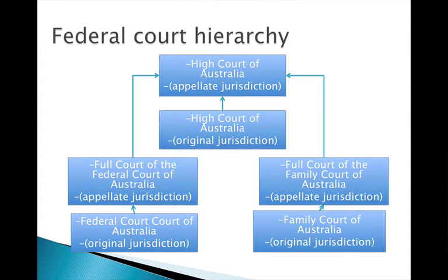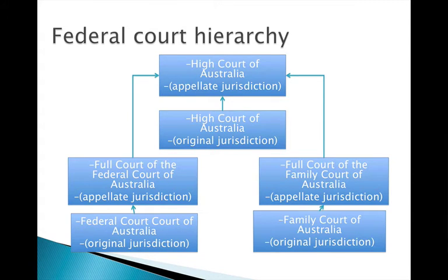There are two other courts in the federal court hierarchy. We have the Federal Court, which includes an original jurisdiction, and the Full Court of the Federal Court, which is the appellate jurisdiction. If a party isn't happy with a decision in the federal court, they can appeal — generally with more than one judge sitting the second time. You'd go from original jurisdiction to the federal court, appeal to the Full Court of the Federal Court, and if still not satisfied, ask for leave from the High Court and appeal there.